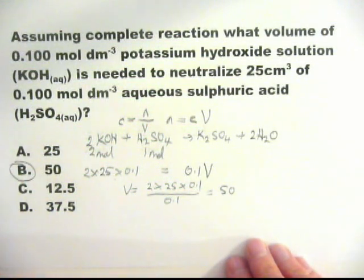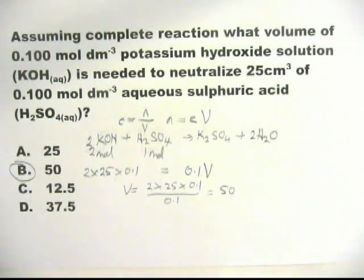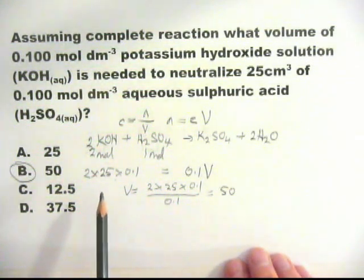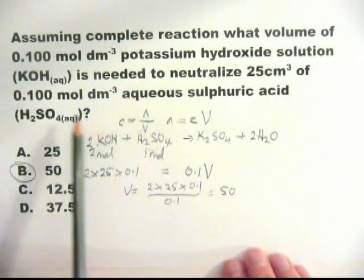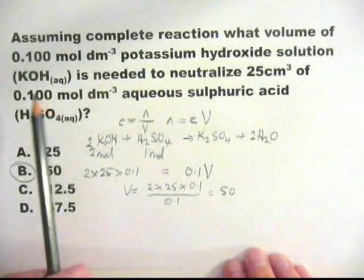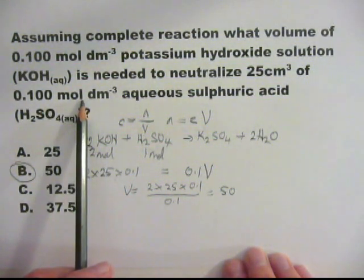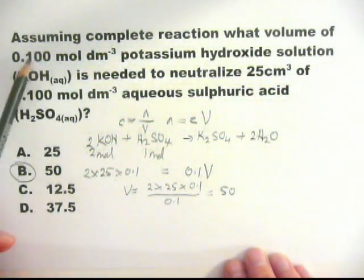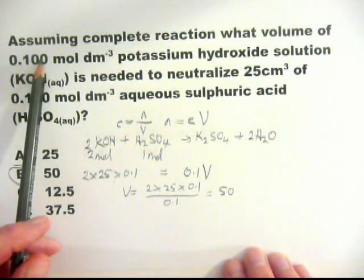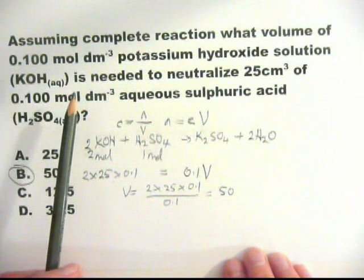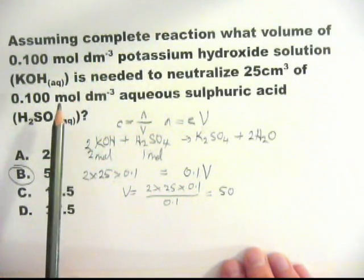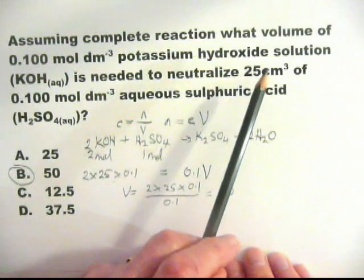There we go, 50. Now, again, as in the previous one where we were doing potassium hydroxide and hydrochloric acid, you could have eliminated the other possible answers. Because if you're neutralizing the potassium hydroxide with 25 cm³ of this particular strength of sulfuric acid, when you come to that strength of potassium hydroxide, you have to use more potassium hydroxide than sulfuric acid. Since the concentrations of potassium hydroxide and sulfuric acid are the same, therefore, you must be using twice the amount of potassium hydroxide for this quantity of sulfuric acid.